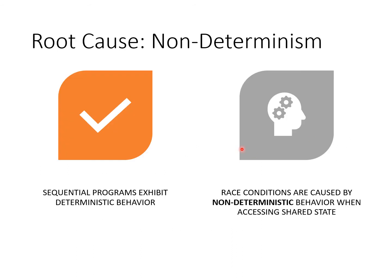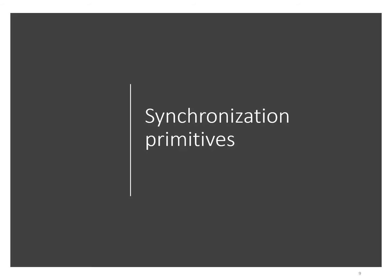The root cause is non-determinism. Sequential programs don't have this problem because they execute deterministically. Race conditions are caused by non-deterministic behavior when accessing shared state, and the solution is to impose some ordering on this non-deterministic execution so that our code executes correctly. We do this using synchronization primitives.